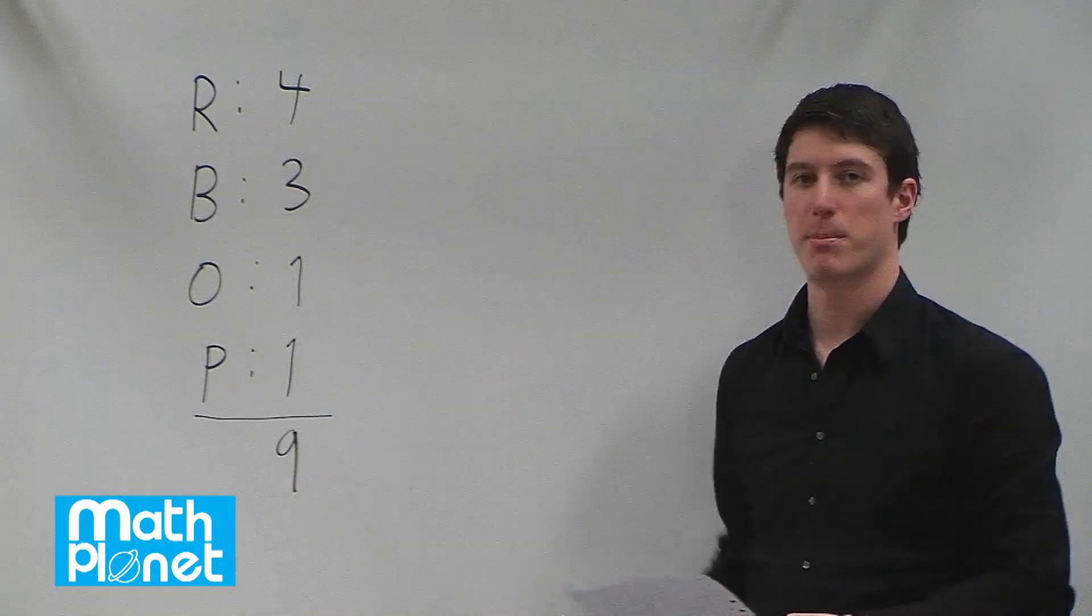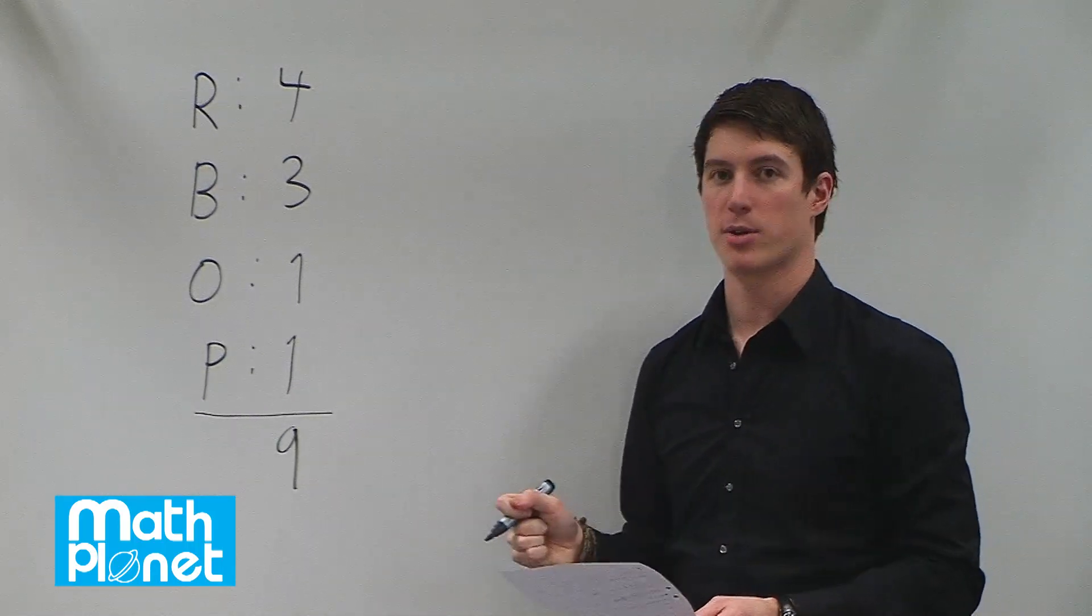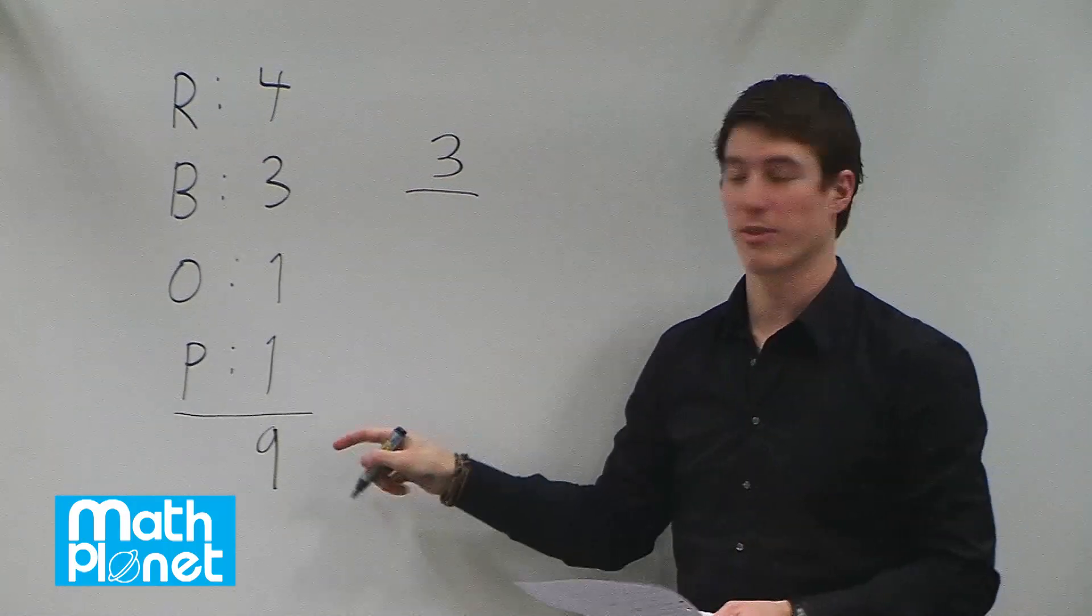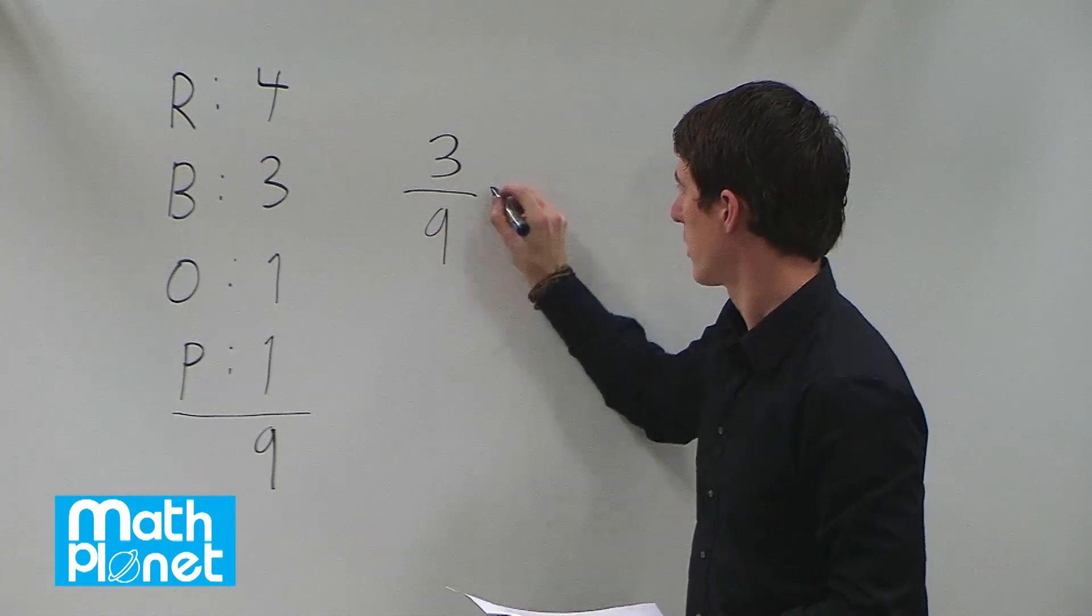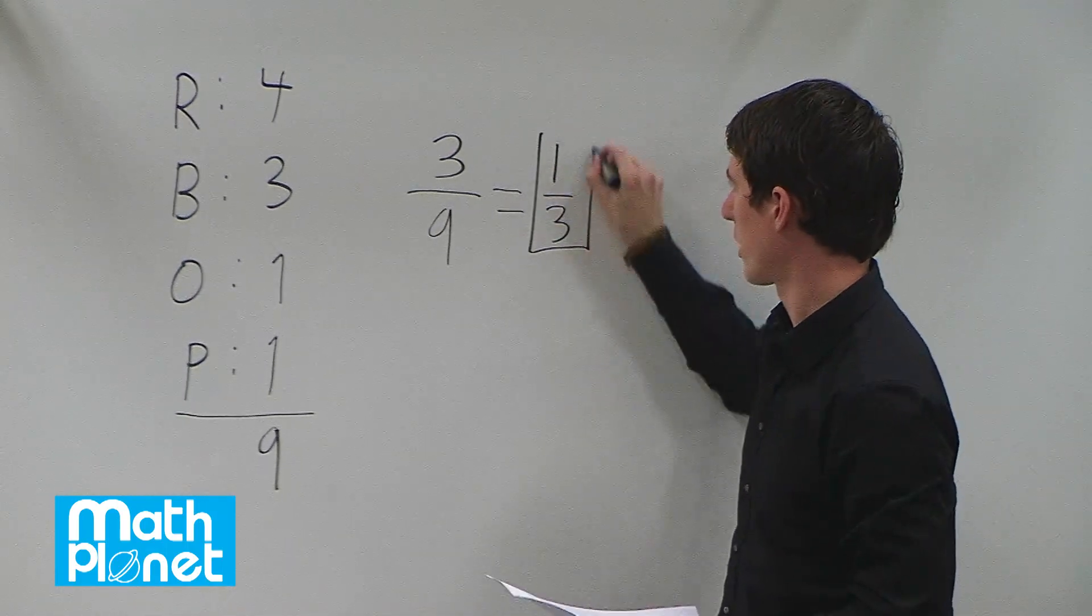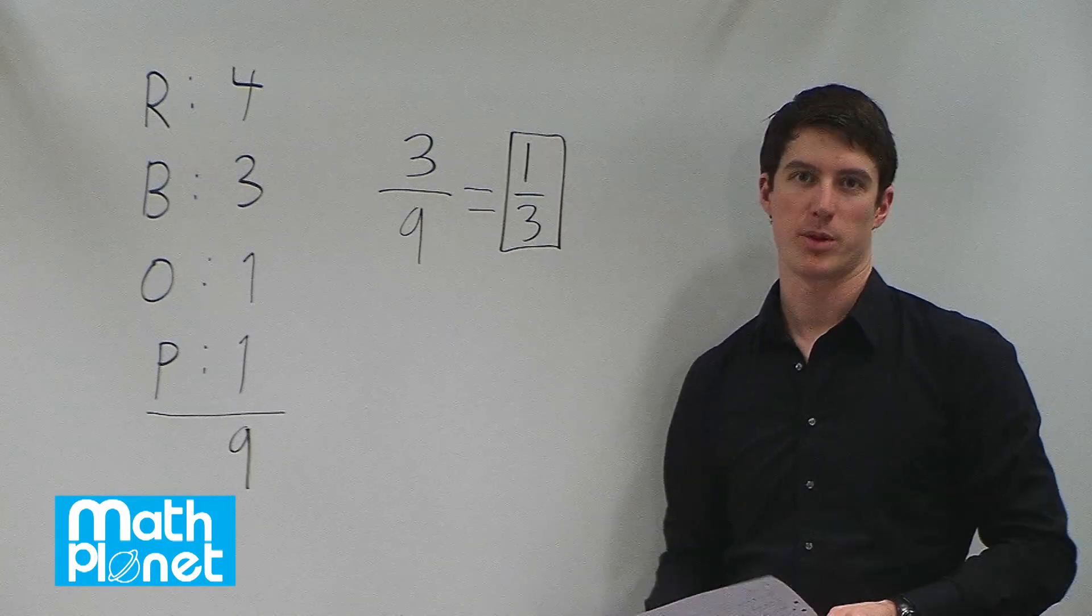And then the probability of drawing a blue pen out is the number of blue pens, three, divided by the total number of pens, nine. So the probability is one-third, or we could also say 33.3 repeating percent.